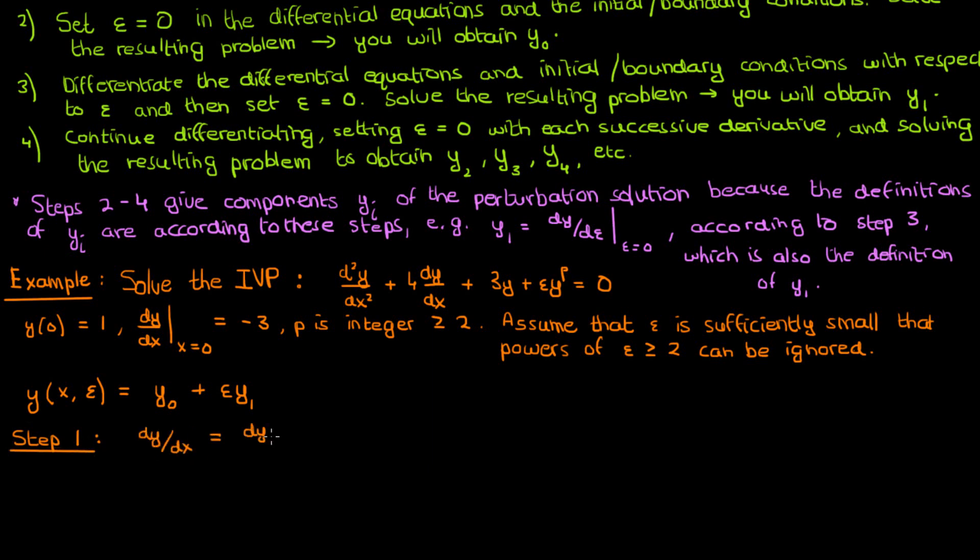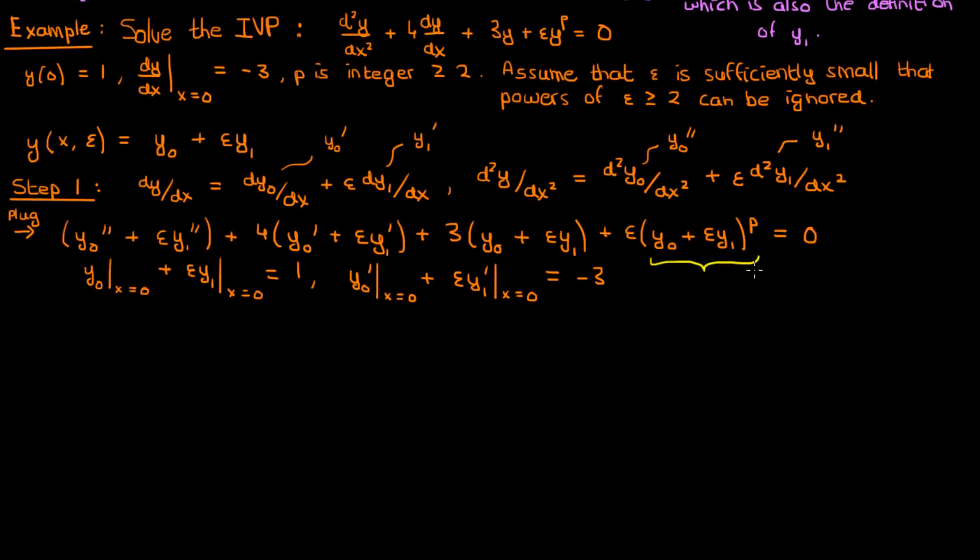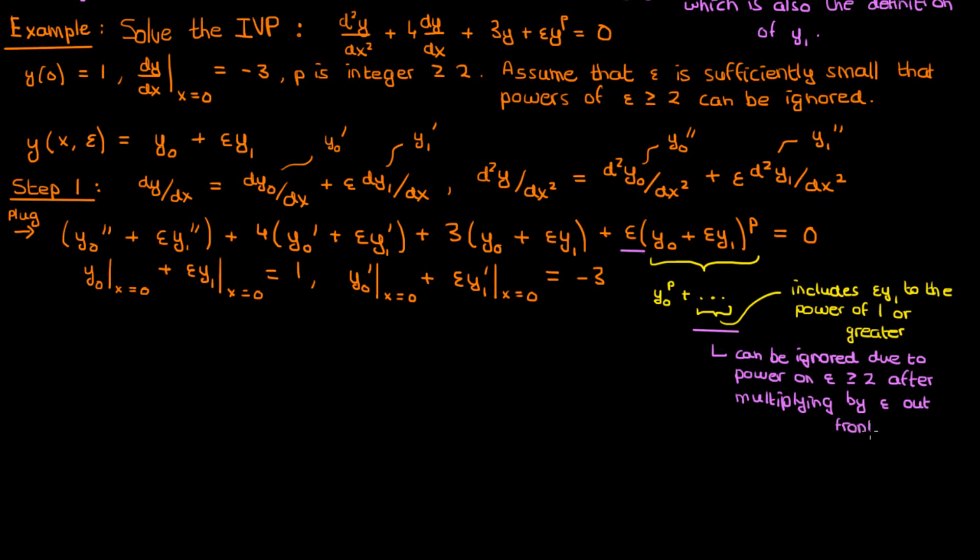As mentioned before, the first step is to substitute our perturbed solution y into the initial value problem. To do that, we need the first and second derivatives, which are just y0 prime plus epsilon times y1 prime and y0 double prime plus epsilon times y1 double prime. Note that the prime here means a derivative with respect to x. Now, plugging this into the initial value problem gives us the following. Because p is an integer greater than or equal to 2, the expansion of this nonlinear term will include a y0 to the power of p, while the remainder of the terms will include epsilon times y1 to a power of 1 or greater. And if the remainder of the terms of this expansion alone contain epsilon times y1, and if we have epsilon on the outside as well, then all of the terms under these three dots can be ignored because they have a power of epsilon greater than or equal to 2. And if we perform the simplification, we get the following initial value problem.